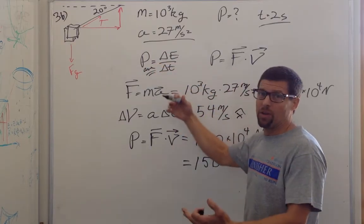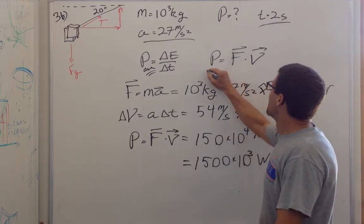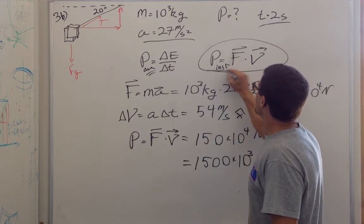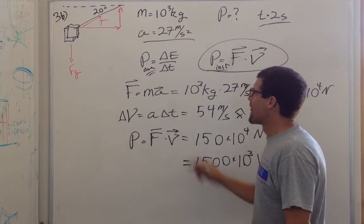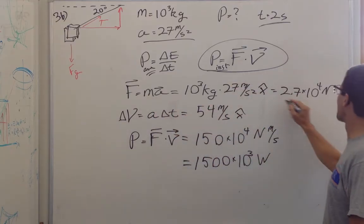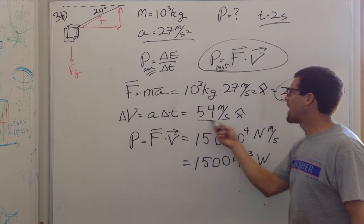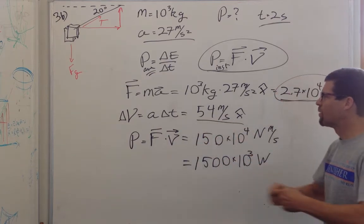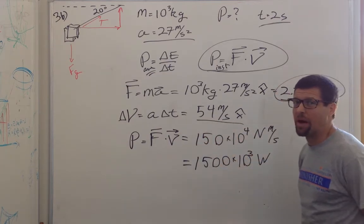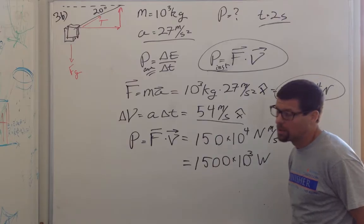The initial power is going to be zero because it's not moving. The instantaneous power is force times velocity. And so the force of mass times acceleration is 27 kilonewtons. And the acceleration times time is 54 meters per second. What's that, about 120 miles an hour in 2 seconds? That's a sports car.